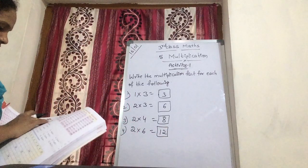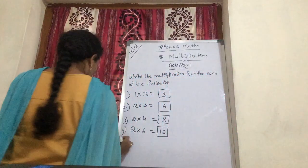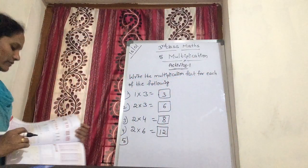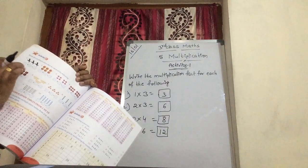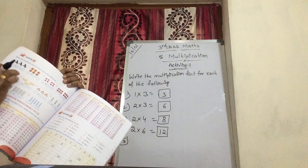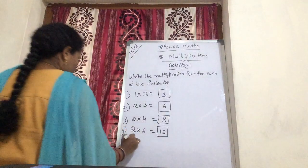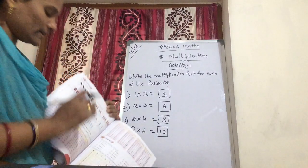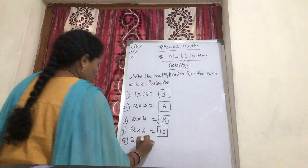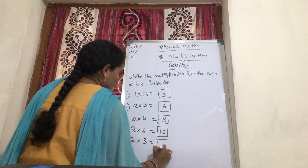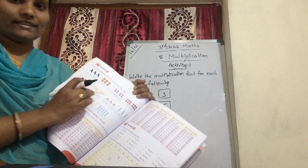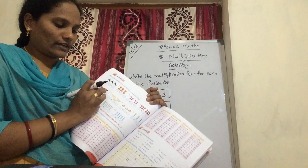Now, next. Fifth one. How many rows? 2 rows. Each row, how many apples? 1, 2, 3 apples. So, 2 into 3 — that's 6. Count it — 1, 2, 3, 4, 5, 6. Yes, 6 apples are there.